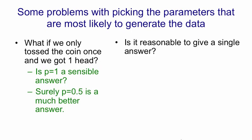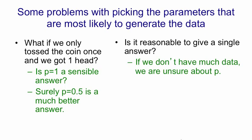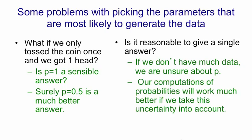It's sort of intuitively obvious that a much better answer is 0.5, but how can we justify that? More importantly, we can ask, is it reasonable to give a single answer? We don't know much, we don't have much data, and so we're unsure about what the value of p is. So what we really ought to do is refuse to give a single answer, and instead give a whole probability distribution across possible answers. An answer like 0.5 is fairly likely, an answer like 1 is maybe still pretty unlikely if we have some prior belief that coins come down heads half the time.